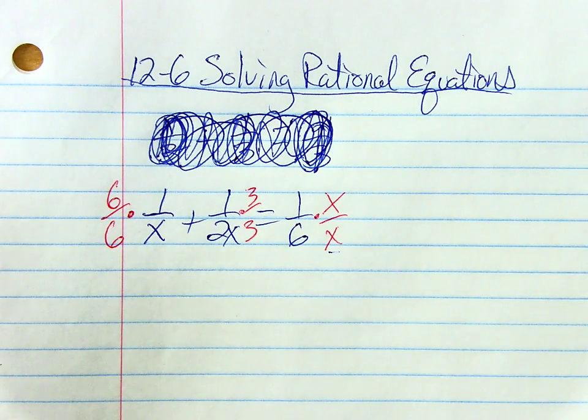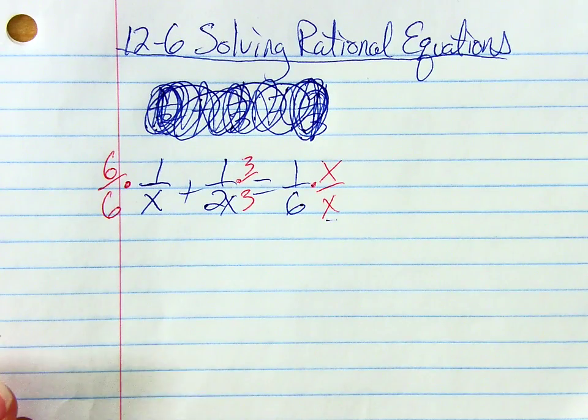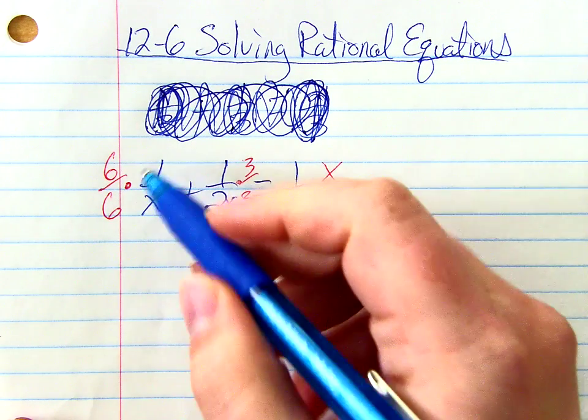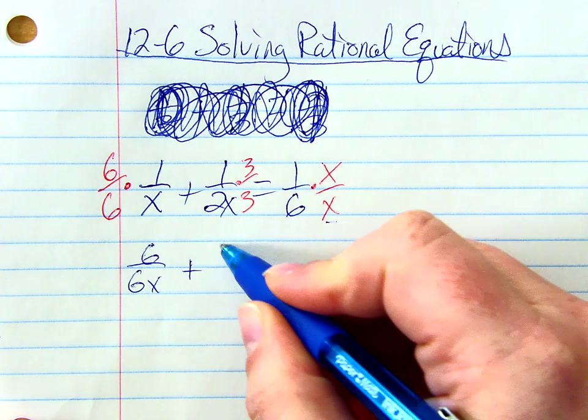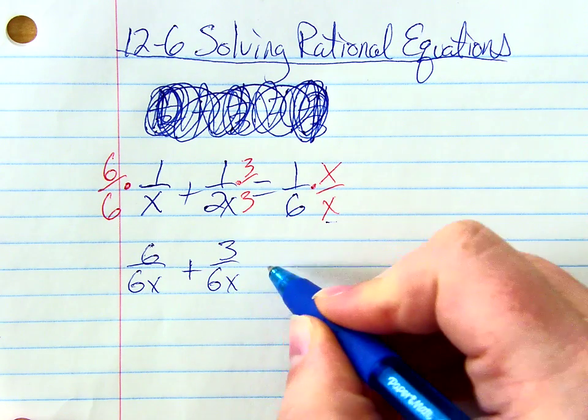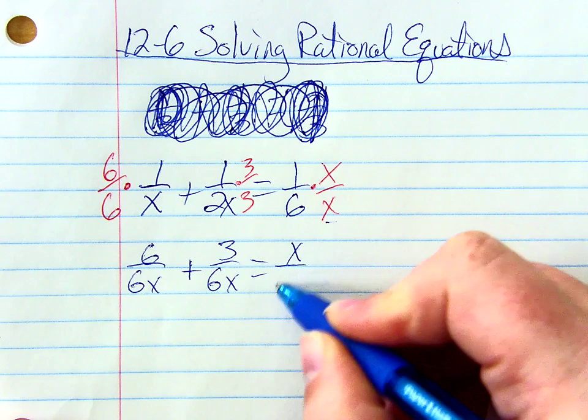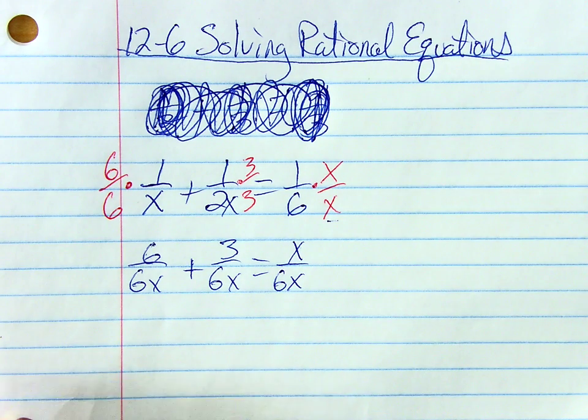Right, but I'm not going to treat it any differently. I want everybody to have a common denominator. So if I simplify each one now, this first fraction is going to be 6 over 6x, plus 3 over 6x, equals x over 6x. Now everybody has a common denominator. That's pretty good.